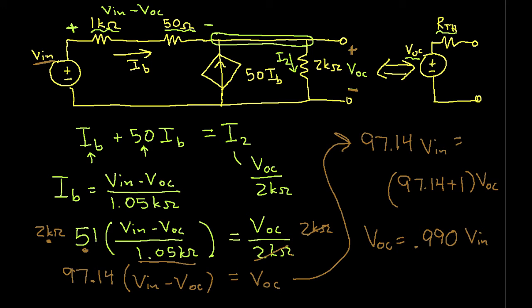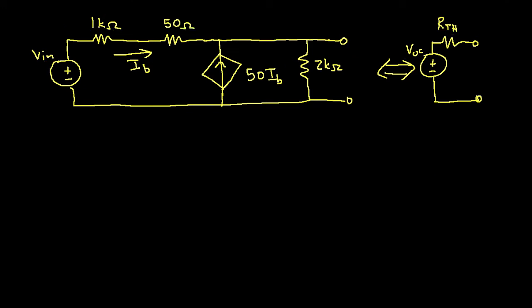We still need R Thevenin. And to get that, we need to find the short circuit current, ISC. So let's bring up the original circuit. And to find ISC, we will short the two terminals and find the current that flows between them.